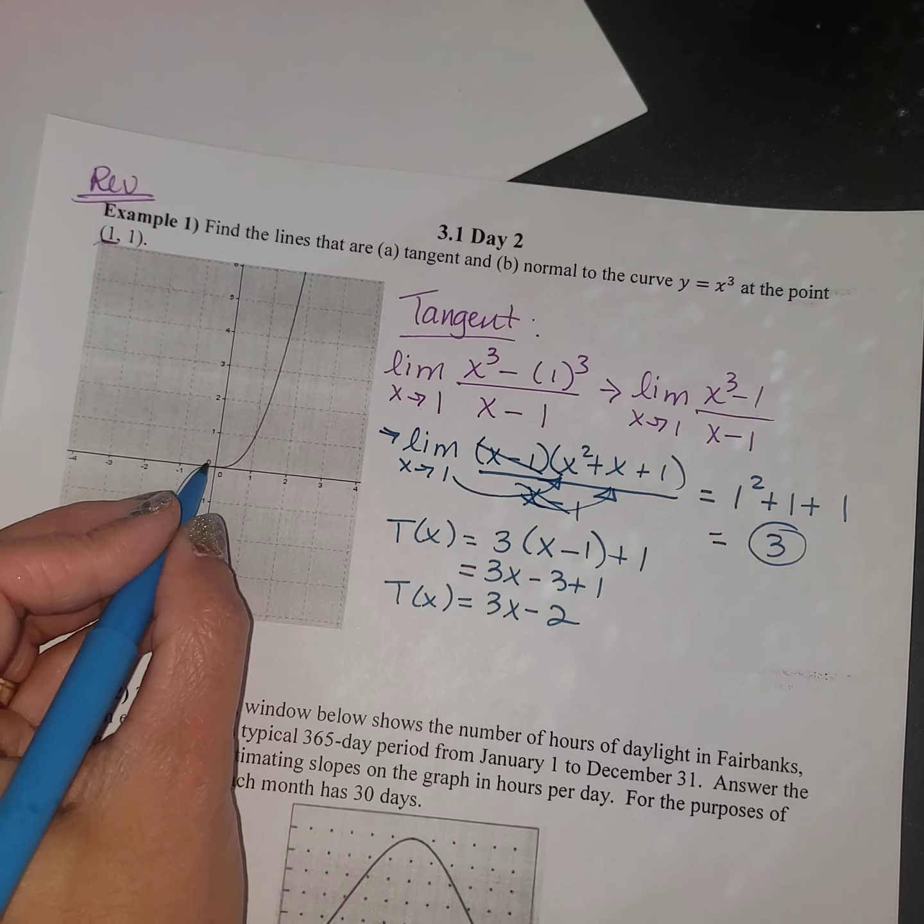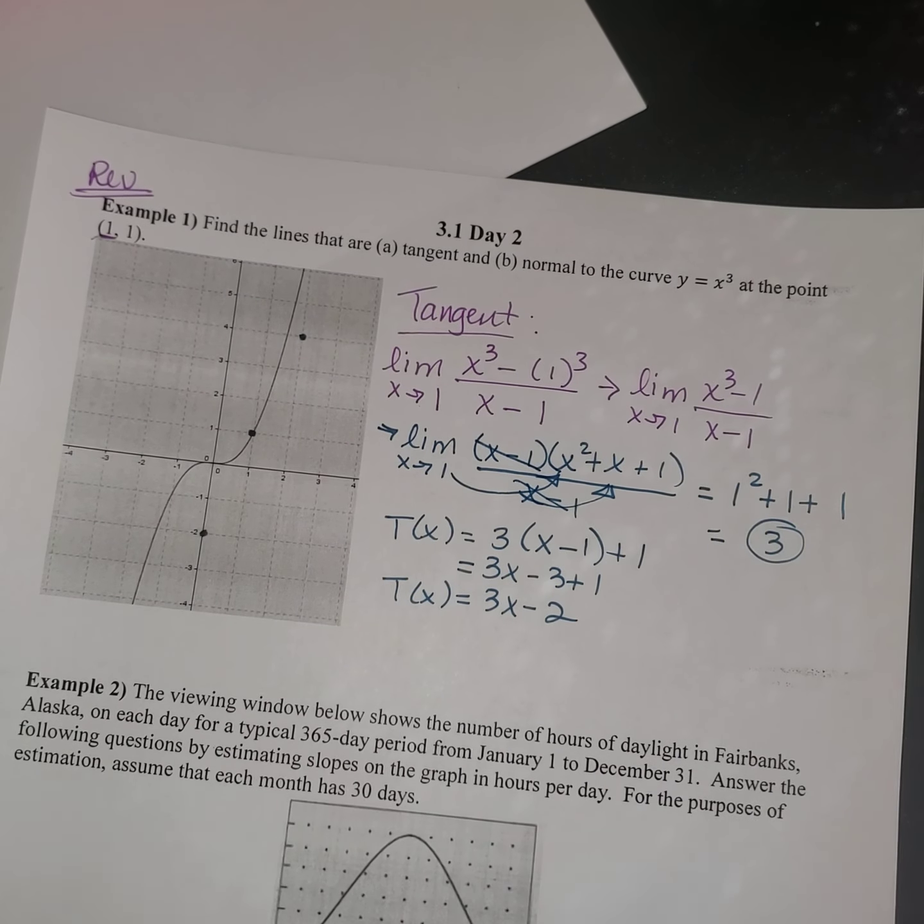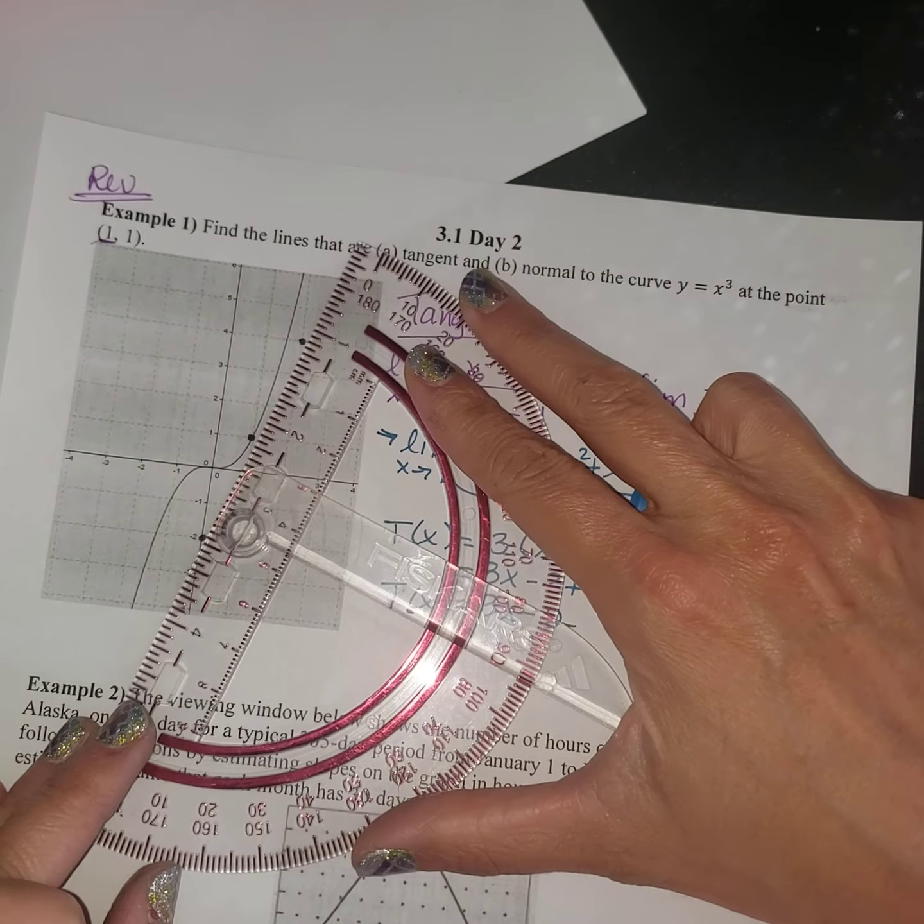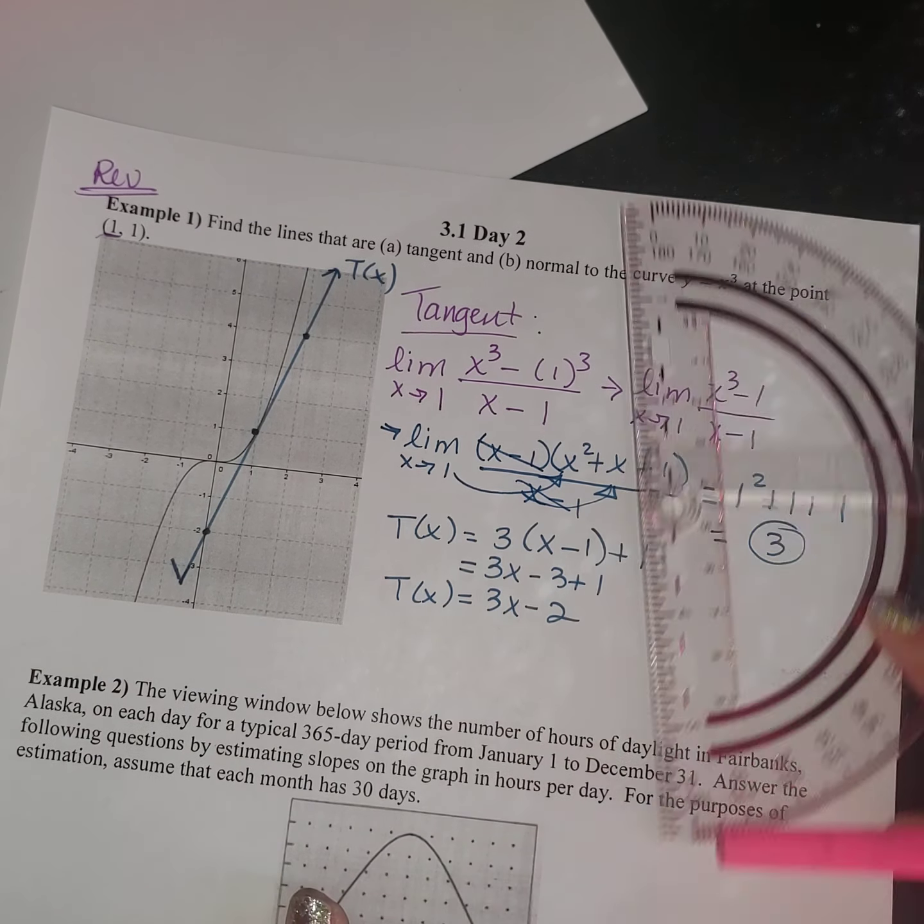So then our tangent line, t of x, is going to equal the slope times x minus the x value was a 1 there, plus the y value is also a positive 1. And then when we simplify that out, 3x minus 3 plus 1, we get t of x equals 3x minus 2.